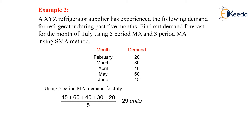40 for April, 60 for May, and 45 for June — these are the respective demands. Using the five-period moving average, we simply add all of them from June to February: 45 plus 60 plus 40 plus 30 plus 20, whole divided by 5, which gives 29 units.